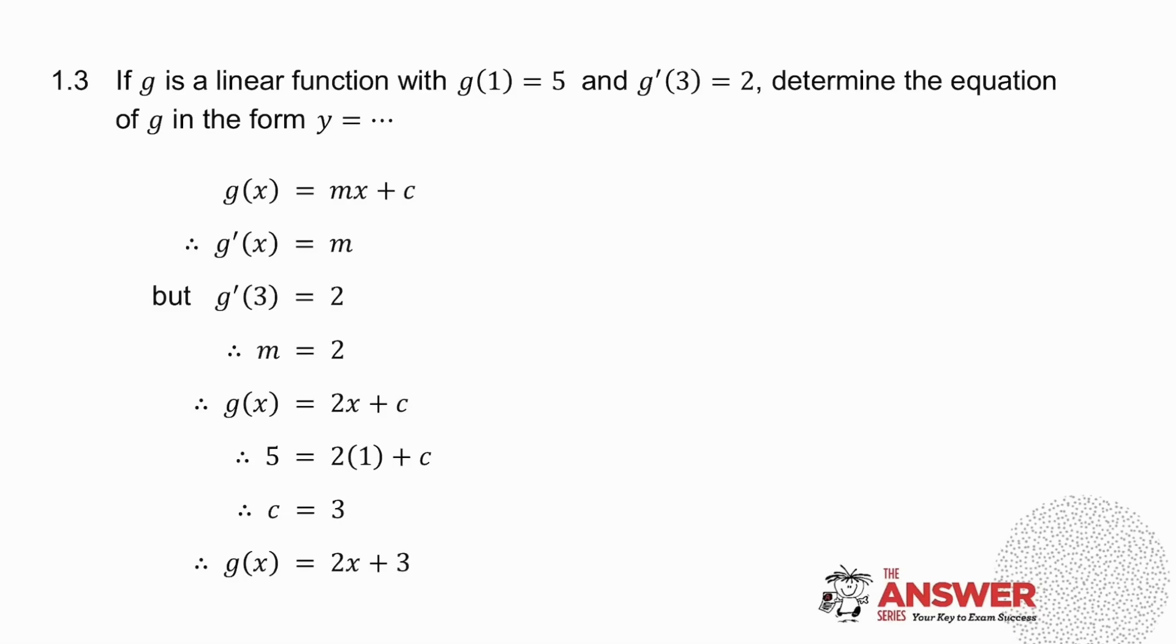1.3 gives you a linear function. Now a linear function is a straight line, so I can write it as g(x) equals mx plus c. They told me that the derivative when x is 3 is 2. Now the derivative of a straight line graph—if I've got g(x) equals mx plus c, the derivative is simply m. It doesn't matter at what x value it is because the derivative of a straight line is constant.